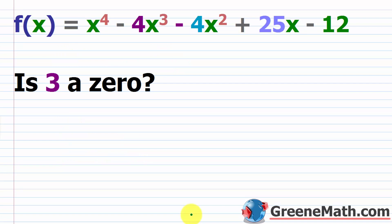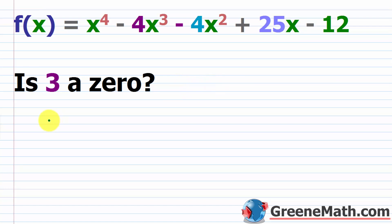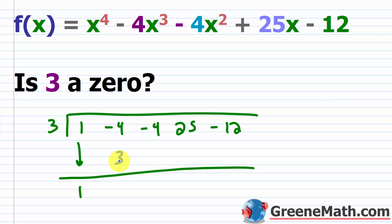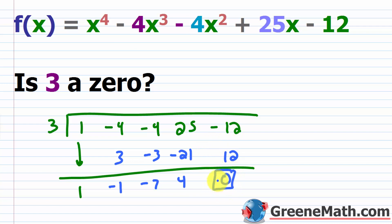Let's look at one example. We have f of x equals x to the fourth power minus 4x cubed minus 4x squared plus 25x minus 12. We're asking: is 3 a zero? Would the point (3, 0) be an x-intercept? We use synthetic division: put 3 here, with coefficients 1, negative 4, negative 4, 25, negative 12. Working through: 3 times 1 is 3; negative 4 plus 3 is negative 1; 3 times negative 1 is negative 3; negative 4 plus negative 3 is negative 7; 3 times negative 7 is negative 21; 25 plus negative 21 is 4; 3 times 4 is 12; negative 12 plus 12 is 0. The remainder is 0, so yes, 3 is a zero, solution, or root for this function.